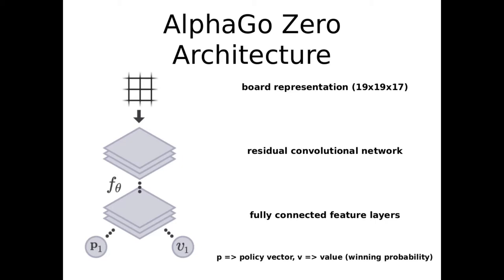Let's dive into the AlphaGo Zero architecture. As input we have a board representation of shape 19×19×17. We have 19×19 stones, 15 boards from the past, one current board, and one layer encoding whether it's the black or white turn. After that we have a residual convolutional network, and then at the end a fully connected feature layer.